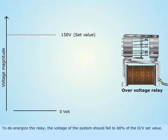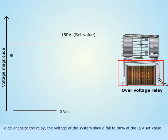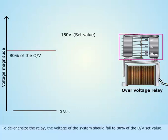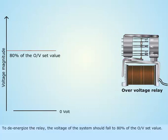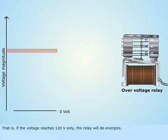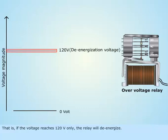To de-energize the relay, the voltage of the system should fall to 80% of the over voltage set value. That is, if the voltage reaches 120 volts, the relay will de-energize.